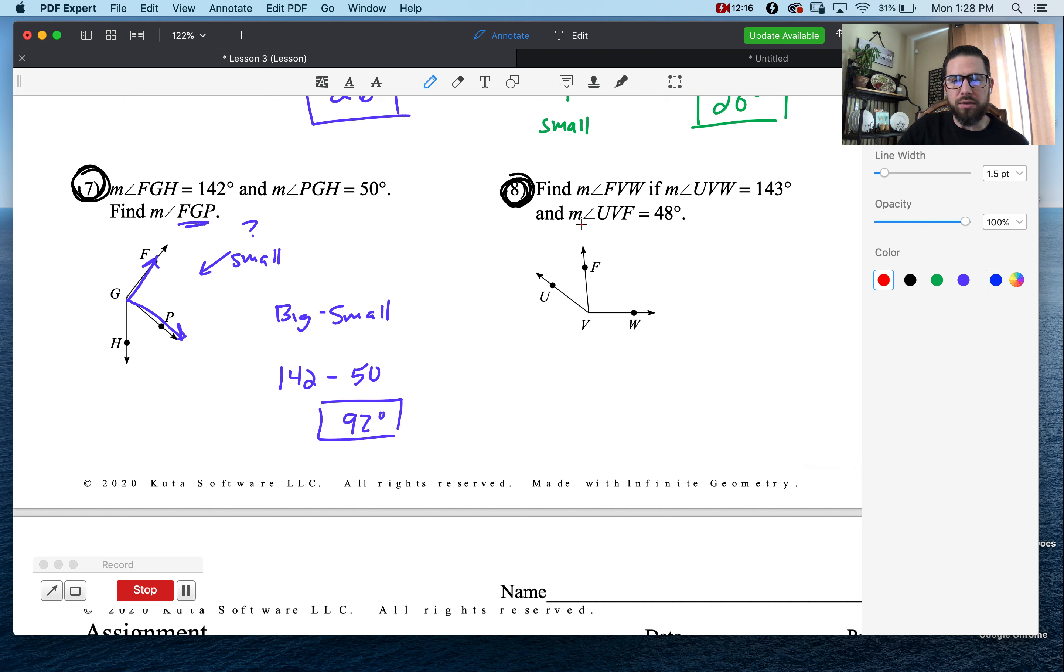Number eight, they want us to find FVW. FVW, that's also a small piece. So in order to find a small piece, we need to go big minus small. Our big is 143. Our other small is 48. And I think we get 95 degrees when we subtract them.